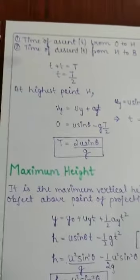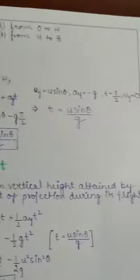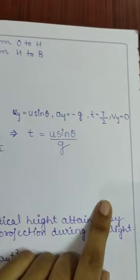If we look at highest point H, then our vertical component velocity is 0. So, v_y equals to 0. Small t equals to capital T upon 2. a_y equals to minus g. Using the equation v_y = u_y + a_y t, we get 0 = u sin theta minus g times T/2, which gives us T = 2u sin theta upon g.